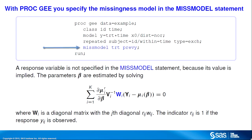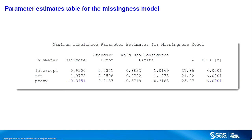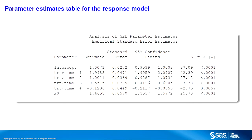You request a weighted GEE by specifying a missingness model in the miss model statement. Note that no response is specified in the miss model statement since its value is implied by the data. The parameters beta are estimated by solving generalized estimating equations that include a weight matrix W. The elements of W are derived from the missingness model. PROC GEE provides tables of parameter estimates for both the missingness and response models. Note that the variable PREVY is significant. The significance of PREVY indicates that the missing completely at random assumption is not appropriate for these data. In this example, the model gives you estimates for the treatment effect at each time period.